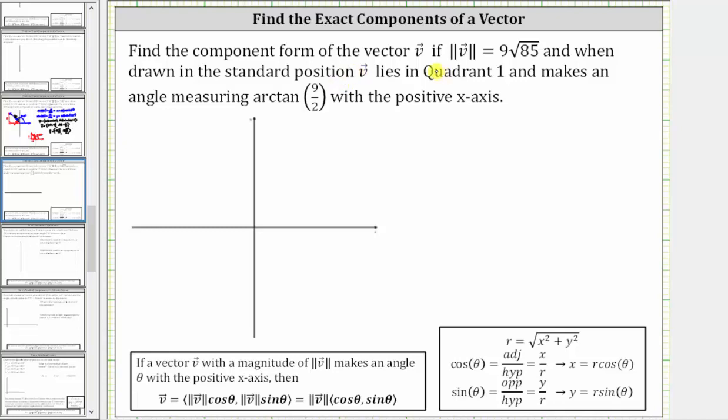Find the component form of the vector v if the magnitude is equal to 9√85, and when drawn in standard position, vector v lies in quadrant one and makes an angle measuring arctan(9/2) with the positive x-axis.